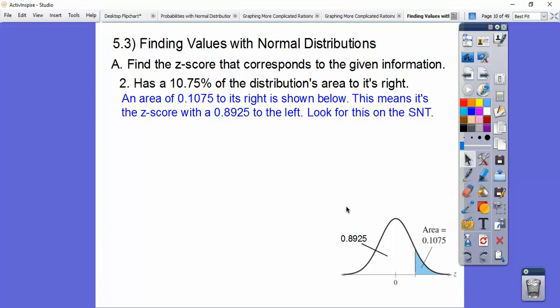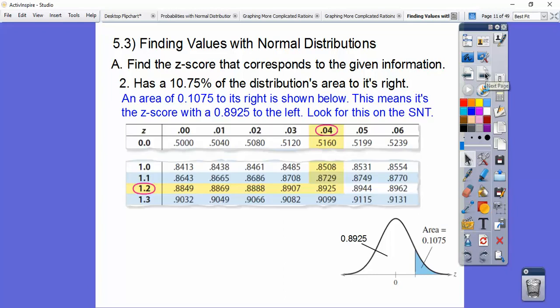So that's the number we look up for our z-score. We're looking for the 0.8925, and that gives us a z-score of about 1.24 right there. Here it is, 0.8925 right there. So our z-score is 1.24 that gives us that value.